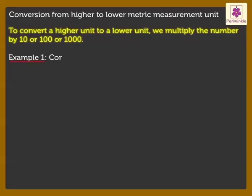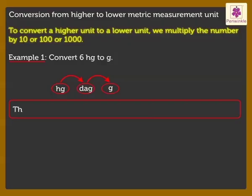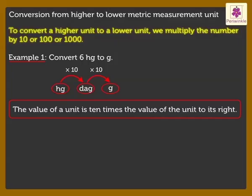Example 1: Convert 6 hectograms to grams. First, count the places to the right of hectograms up to grams. We have to move two places. We have already learnt that the value of a unit is 10 times the value of the unit to its right. As we moved two places to the right, the factor is 100. Therefore, on multiplying 6 with the factor 100, we get the answer as 600 grams.